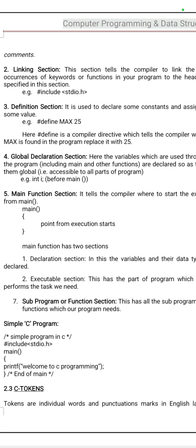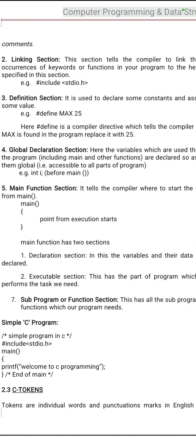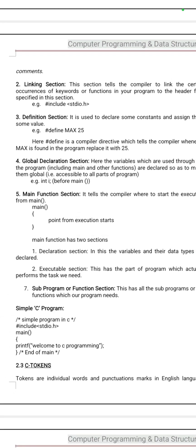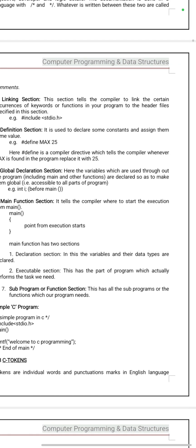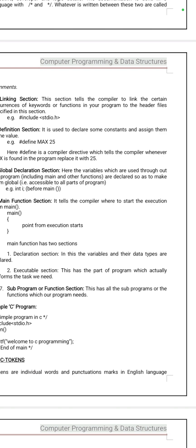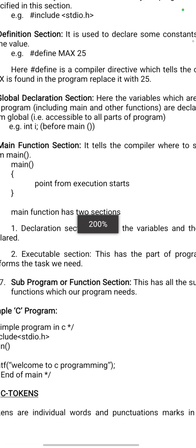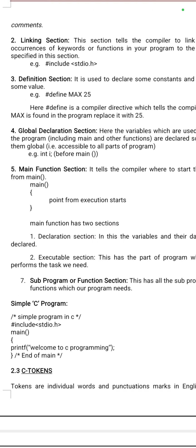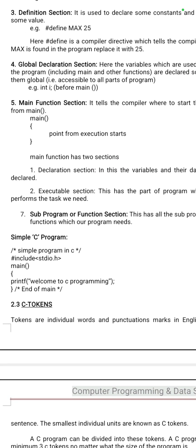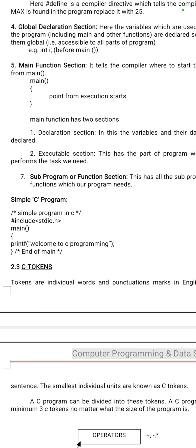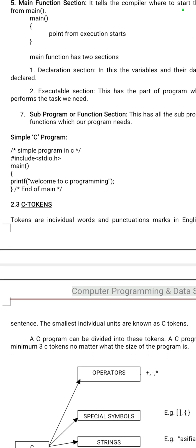The main function is compulsory — void main or int main. Then the sub-program. The declaration section is used for declaring variables and the executable section is used for the executable code of the program. Sub-program is an optional concept. This is the structure of a C language program, and a simple example program is also already mentioned.